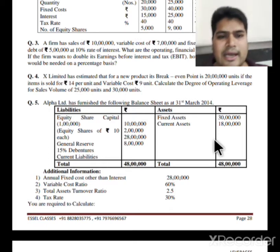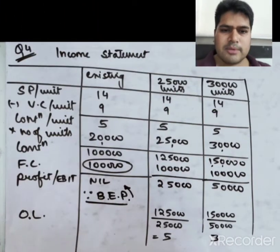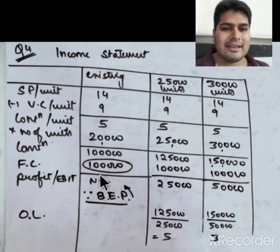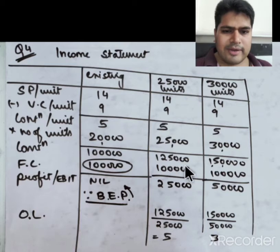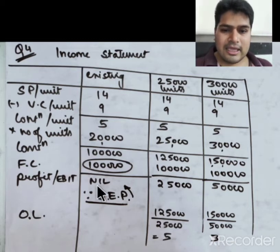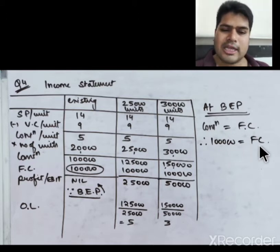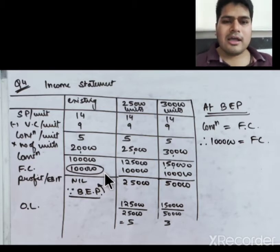Note: at the break-even point itself, OL cannot be calculated because EBIT = 0 and we'd be dividing by zero — it approaches infinity. This confirms that at break-even, contribution equals fixed cost (₹1,00,000). Question number 4 is now solved.